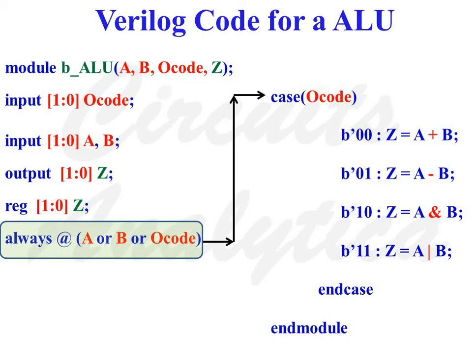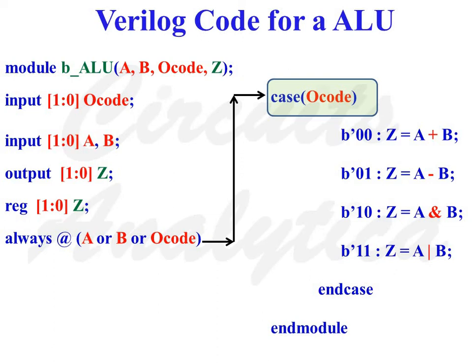always @ (A or B or O-Code) — this line specifies that whenever there is an event on input port A, input port B, or O-Code, execute the following statements. This line denotes the beginning of the case block: case (O-Code), meaning we are going to write various cases for different values of O-Code. When O-Code is equal to 2'b00, perform the operation Z = A + B.